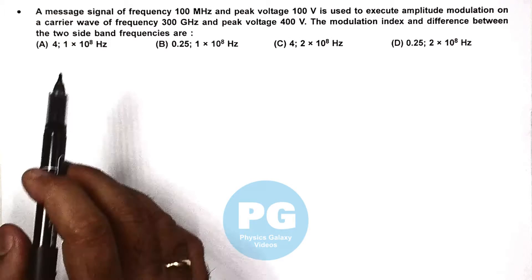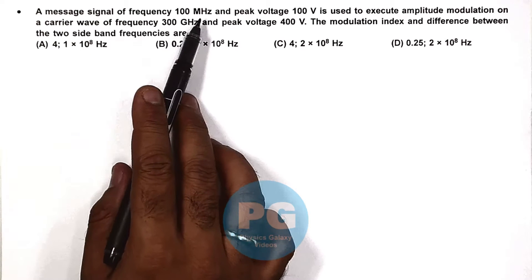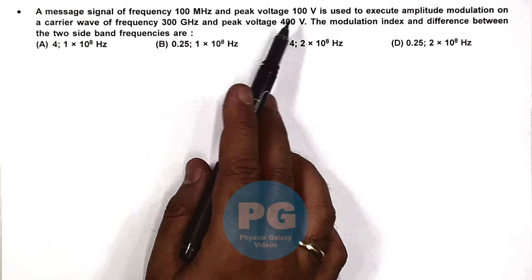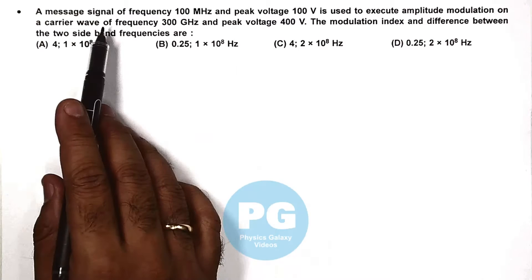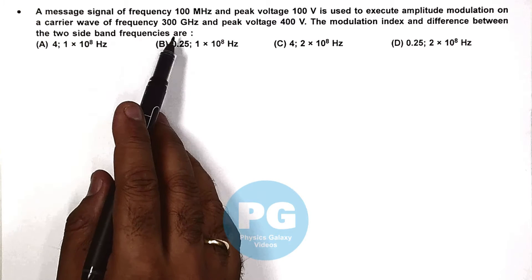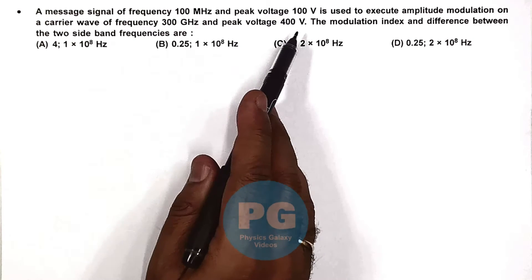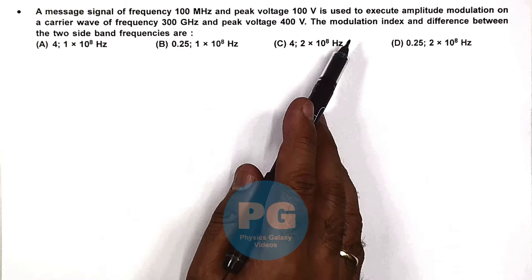In this question, a message signal of frequency 100 MHz and peak voltage 100 V is used to execute amplitude modulation on a carrier wave of frequency 300 GHz and peak voltage 400 V. The modulation index and difference between the two sideband frequencies are...